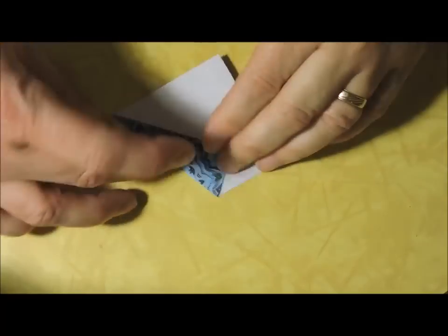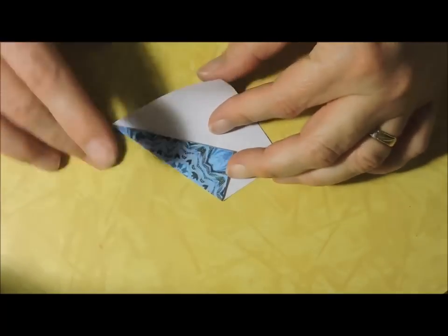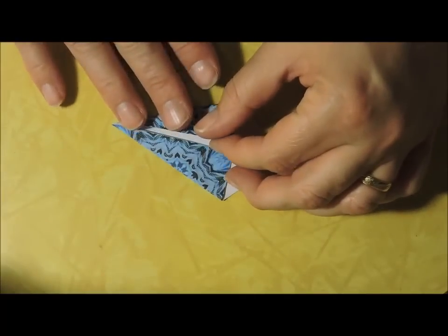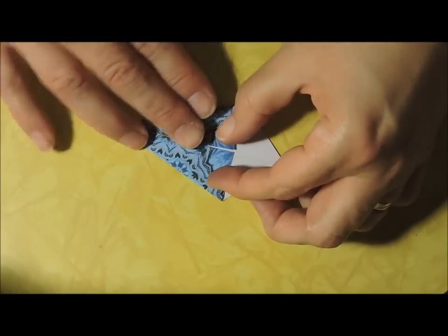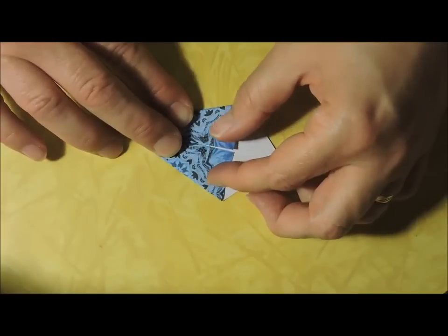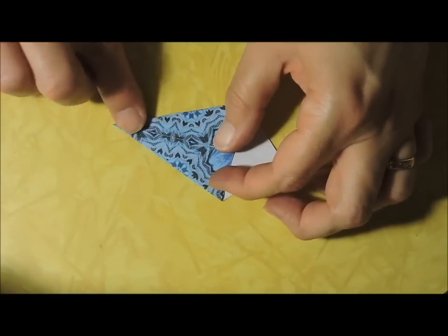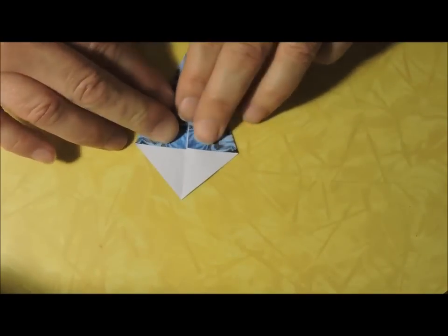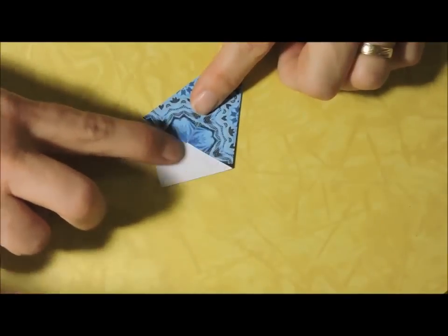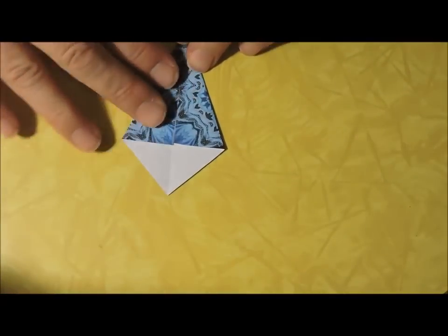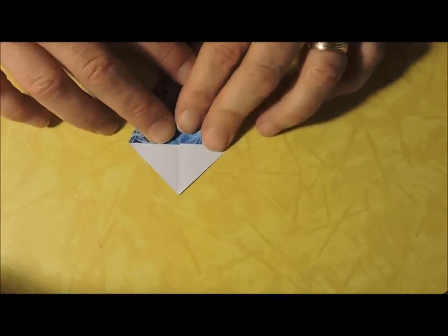And then the next side, same thing. We're just doing a basic kite fold. You want these up here—this needs to go straight across. If those aren't lined up, you're going to end up with a crooked tile.